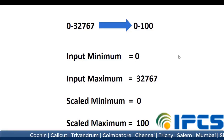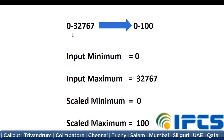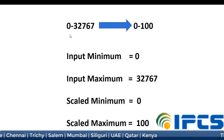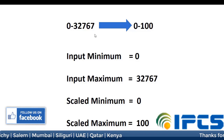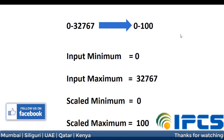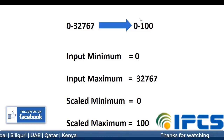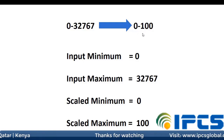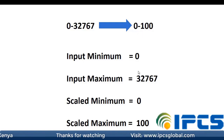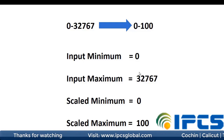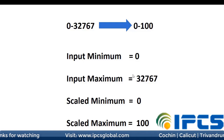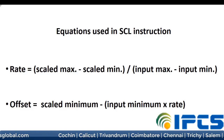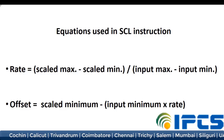Here the digital input is in the range 0 to 32767. We have to convert this digital value to a 0 to 100 range. This is the equation to calculate the rate and offset.